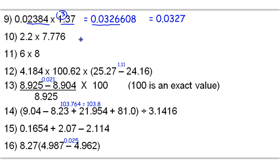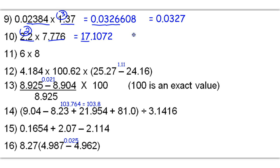2.2 times 7.776 gets me a raw answer of 17.1072. We're going to round to least sig figs because it's multiplication. This is 2 sigs versus 4, so we're going to go with the 2 sigs. My answer needs to be rounded off here — that 7 is going to remain the way it is, so my answer is just 17.